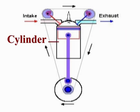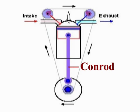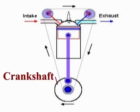Then there is the cylinder, which is where the piston goes up and down. It is connected by the con rod to the crankshaft, which goes round and round.